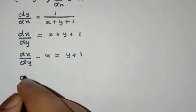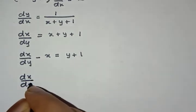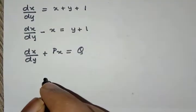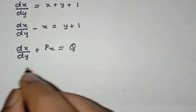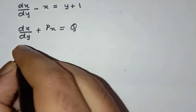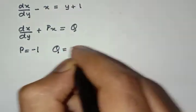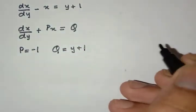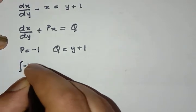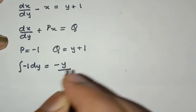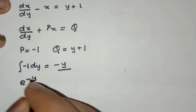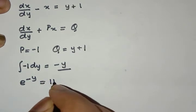This is actually in the standard linear form dx/dy plus P·x equals Q. Here, P will be equal to minus 1 and Q is equal to y plus 1. If we take the integral of minus 1 dy, we get minus y. So e raised to minus y will be the integrating factor.